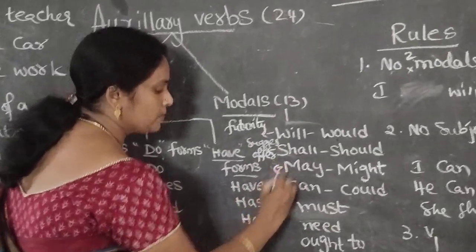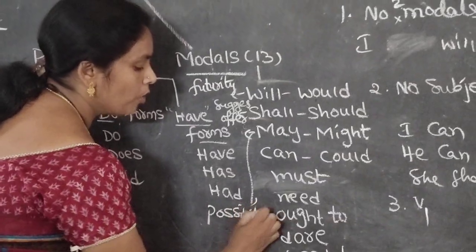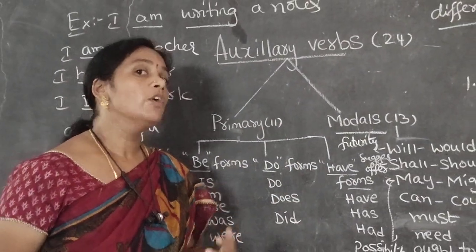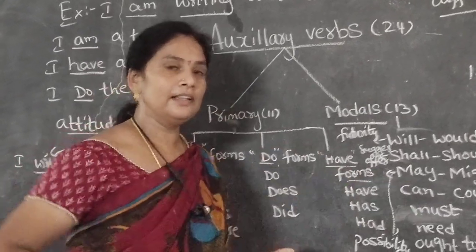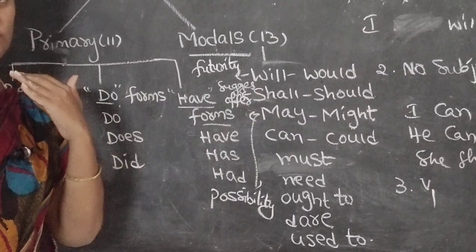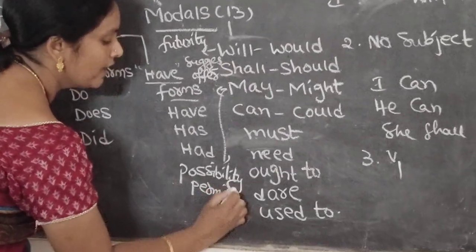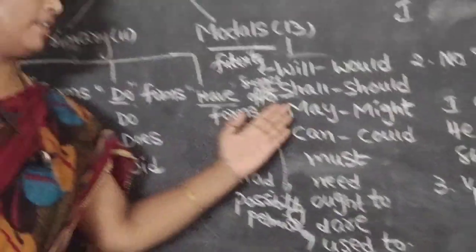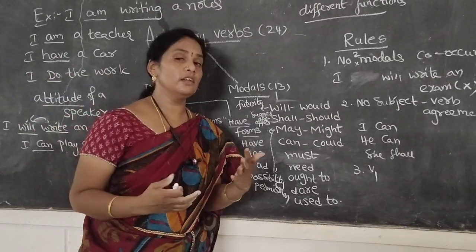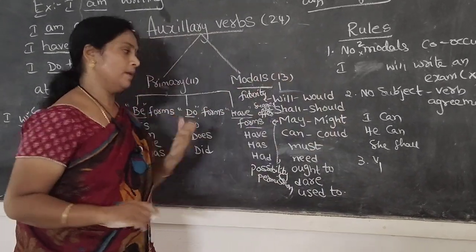May expresses possibility and permission. For possibility: it may rain — there is no hundred percent certainty that the rain will come, we are just predicting. For permission: when you want to enter the class, you say 'may I come in?' — you are asking permission.